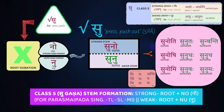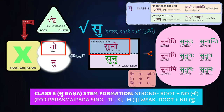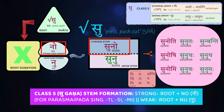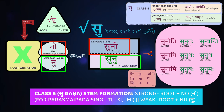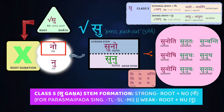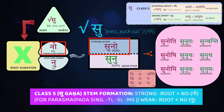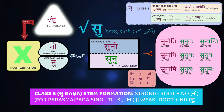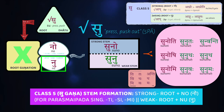You just take the root, you add the marker no to make the strong stem, or you take the root and add the marker nu to make the weak stem. So in the case of our root su, meaning to press, the strong stem is going to be the root su plus no, giving you su-no as the strong stem. The weak stem is the root su plus the marker nu, giving you su-nu.